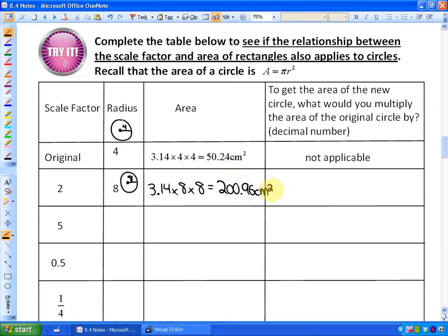Now the question here is to get the area of the new circle, what would you multiply the area of the original circle by? So how do I go from the area of 50.24 to the area of 200.96? We discovered in the last activity we can just divide those. If we divide those, we're finding out that it would be 4. So I'd multiply the original area by 4 to get it.